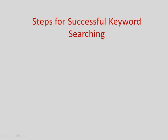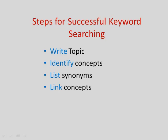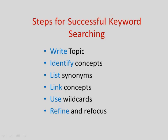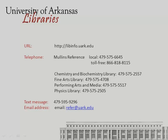To recap, the following steps are recommended for successful keyword searching: Write your research question or topic in one or two sentences. Identify the main concepts. List synonyms for your concepts. Use Boolean connectors AND, OR, and NOT to link your concepts together, and use wildcards where appropriate. Based on your results, identify a few good subjects to refine and focus your search. If you would like further assistance, please contact the reference department or your subject librarian in person, through chat, by phone, or through email.